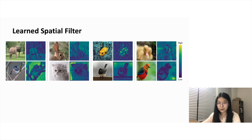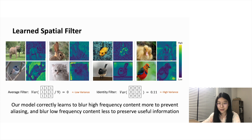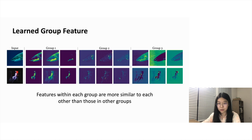Here, we visualize the learned filters for each spatial location with group number equal to 1. We compute the variance for each kernel, where a K-by-K average filter will have zero variance, and an identity filter with one at the center and zero anywhere else will have high variance. As shown in this figure, our model correctly learns to blur high-frequency content more to prevent aliasing, and blur low-frequency content less to preserve useful information. For example, the rabbit in the first row has low variance filters applied on edges, where regions with smoother content are better preserved using filters closer to an identity filter. Further, we visualize the predicted feature maps in each group. Features within each group are more similar to each other than to those in other groups, so filters can be reused without harming performance to reduce computation. Group 1 and 3 generally have lower frequency information compared to group 2.